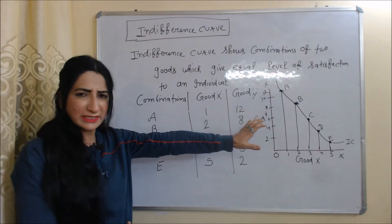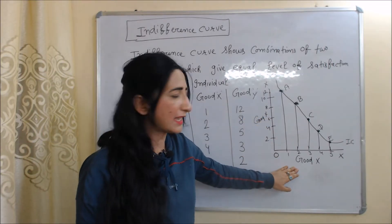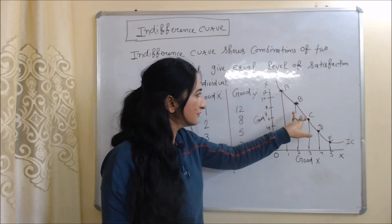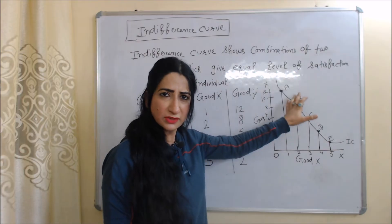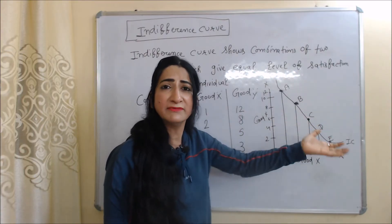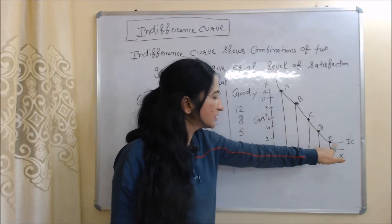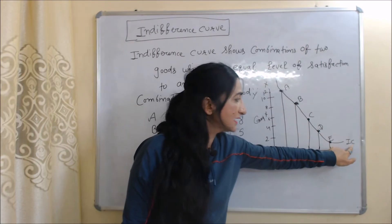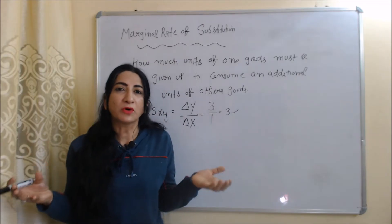If we convert this table into a diagram, on the X-axis we have good X and on the Y-axis we have good Y. You can see the different combinations A, B, C, D, E — whatever combination the consumer buys, they get the same level of happiness and satisfaction. When we join all these combinations, we get our indifference curve, represented as IC.